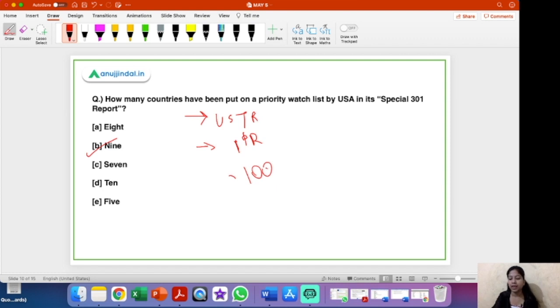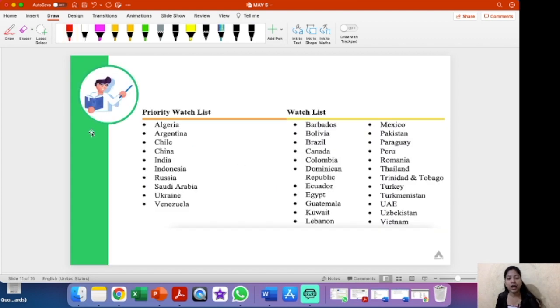That includes India as well. So this is the list priority watch list and the watch list which includes a total number of 23 countries and priority watch list that includes India, China, Russia. So major economies are there in this list. Now why is India here? China is here because China is often accused of intellectual property rights theft.